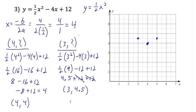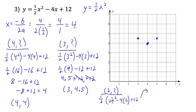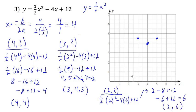We'll substitute 2 into the equation. 2 squared is 4, and half of 4 is 2. Then 4 times 2, with the subtraction sign, and plus 12 tags along. 2 minus 8 is negative 6, and negative 6 plus 12 equals 6. So our point is at 2, 6. Over 2, up 2 — as expected. We have a nice upward-facing wide parabola.